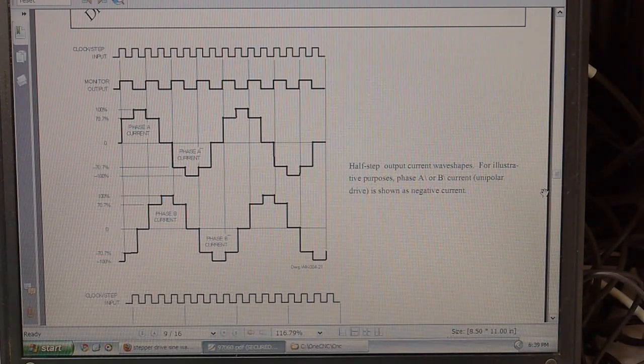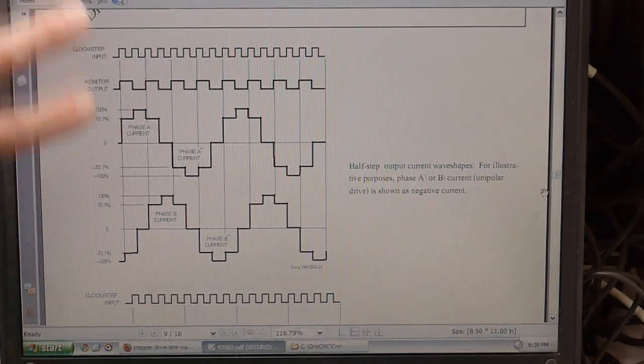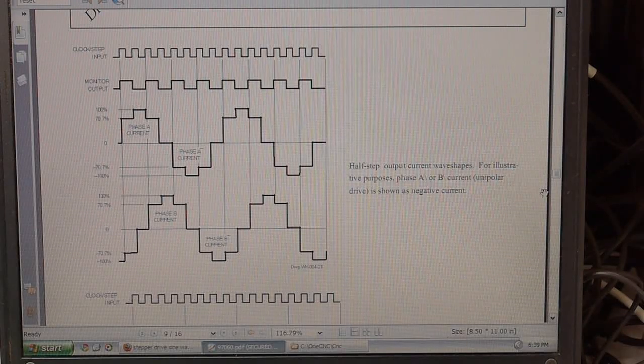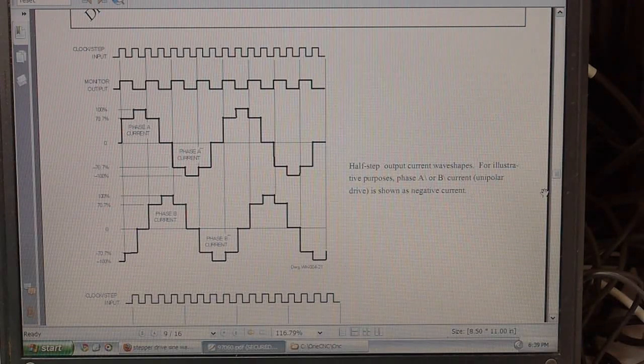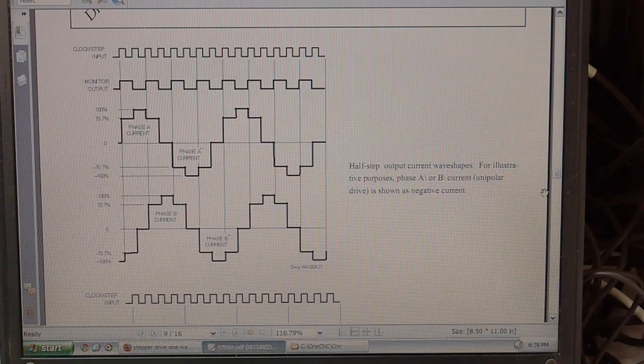So in a bipolar stepper motor that has four wires what you can do is just swap the phase or swap the direction of the current going through the coil. In a unipolar stepper motor you have at least five wires usually six and sometimes eight and what you do is you just switch which ones are connected.